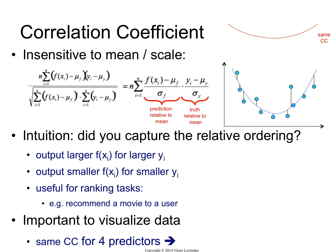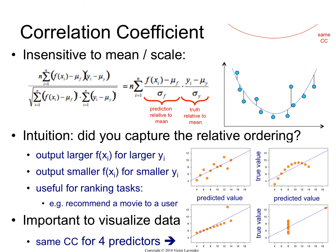So what is correlation coefficient measuring? It's basically measuring if you're capturing the relative ordering of things correctly—if you are predicting larger numbers when the truth was larger, and smaller numbers when the truth was smaller. So it's very useful for ranking tasks.